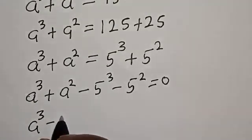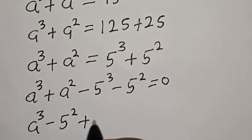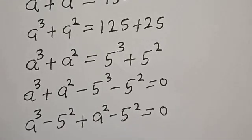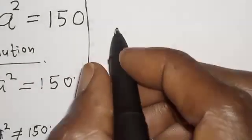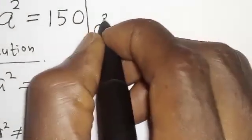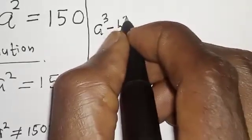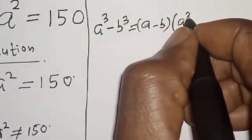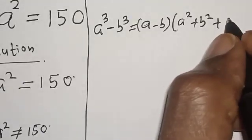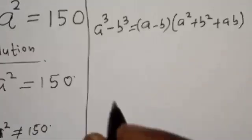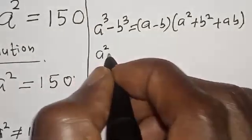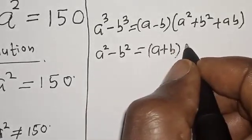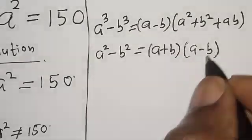A raised to the power 3 minus 5 raised to power 3, plus A squared minus 5 squared, is equal to 0. Remember this identity: A raised to the power 3 minus B raised to the power 3 is equal to A minus B, times A squared plus B squared plus AB. Also, A squared minus B squared is equal to A plus B times A minus B. We are going to make use of these identities.